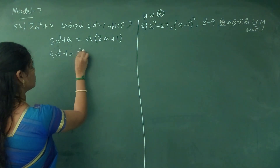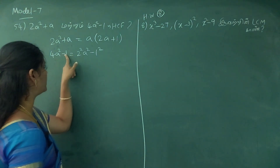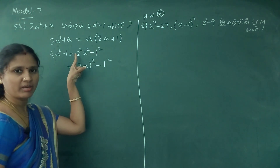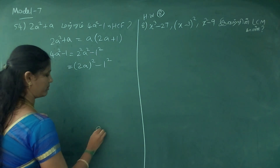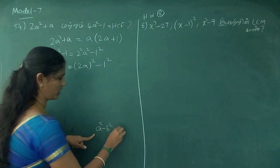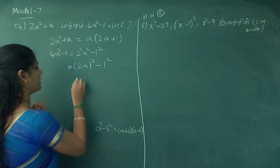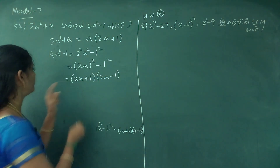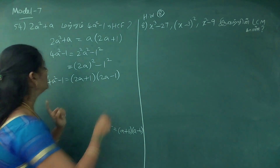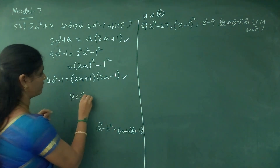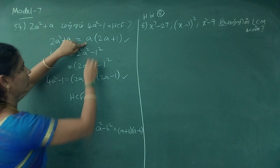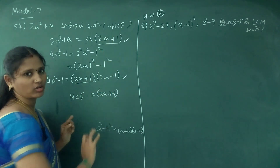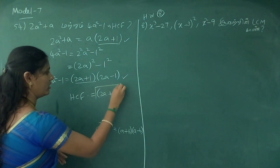Now 4a squared minus 1 and 2a squared minus 1. Using the a squared minus b squared formula, we get 2a plus 1 into 2a minus 1, and 2a minus 1 appears in both. Here 2a plus 1 and 2a minus 1 — the HCF is 2a plus 1.